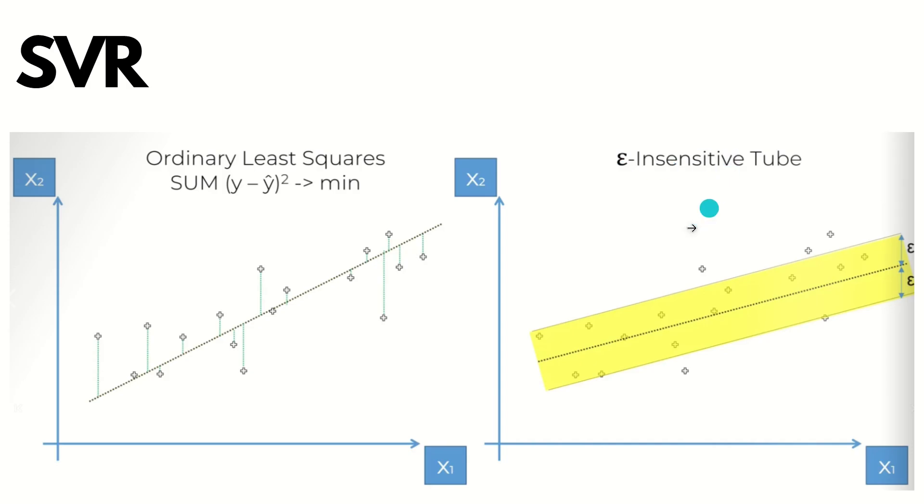This tube itself is called an epsilon-insensitive tube. What does that mean? Any point in the dataset that falls inside the tube will be disregarded for the error. We're not bothering about the points falling inside the tube; we'll only be taking care of the points which are outside. We are insensitive to the points falling inside the tube, but we are sensitive to the points outside of the tube. That's the key behind support vector regression - it gives a little bit of buffer to our model.